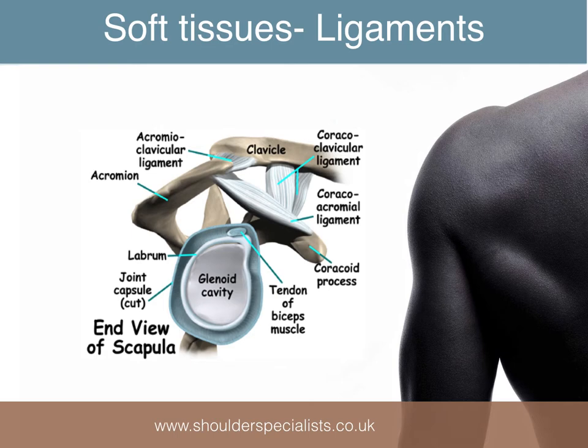The important ligaments around the shoulder include those which stabilise the ball and socket or glenohumeral joint, and those which stabilise the acromioclavicular joint or ACJ. The ligamentous stabilisers of the glenohumeral joint include the labrum and its attached capsular thickenings, known as the glenohumeral ligaments. The inferior glenohumeral ligaments are the most important for stability. The stabilisers of the AC joint are the acromioclavicular ligaments and, more importantly, the coracoclavicular ligaments, which are found between the coracoid process and the undersurface of the clavicle.